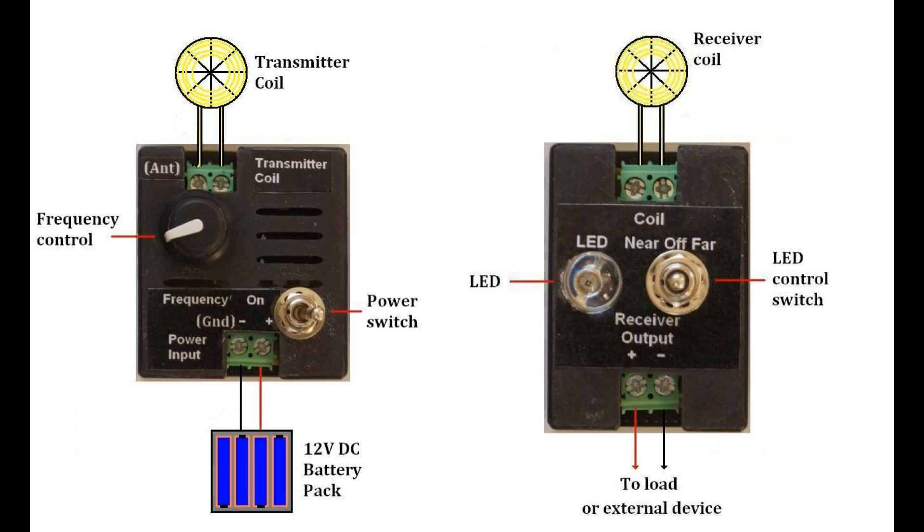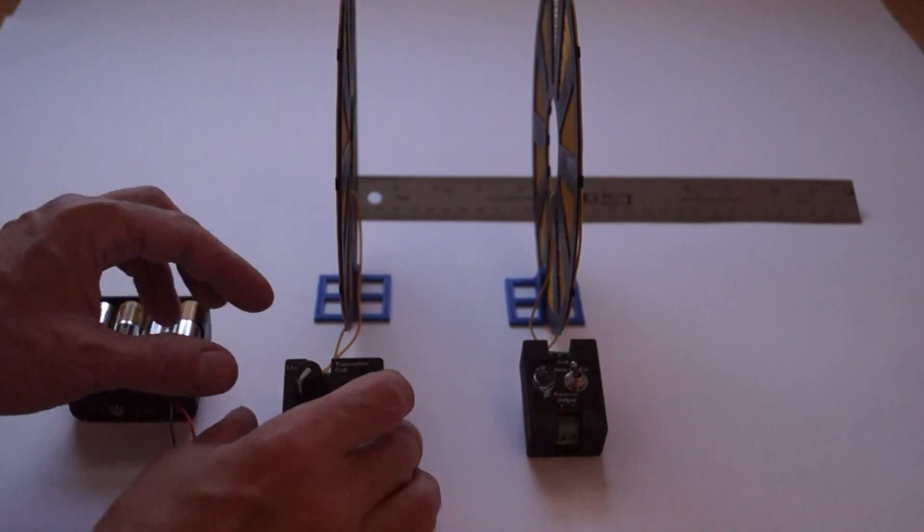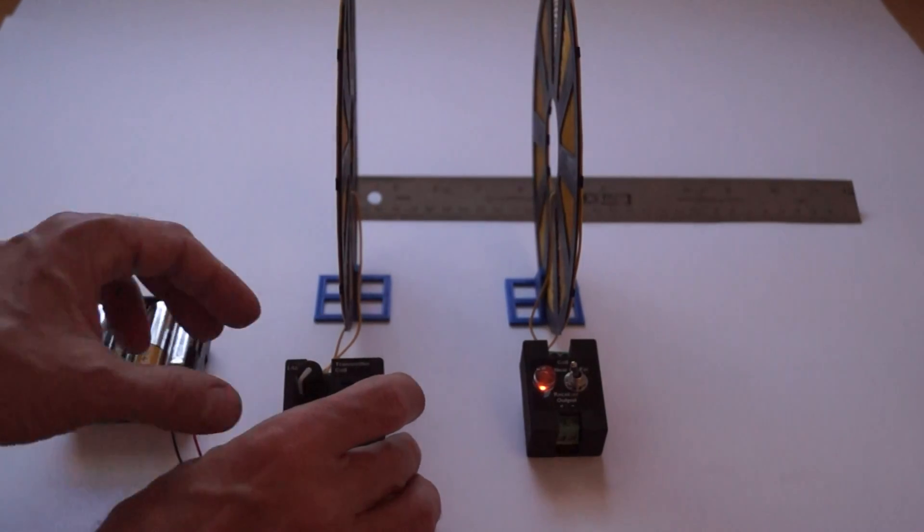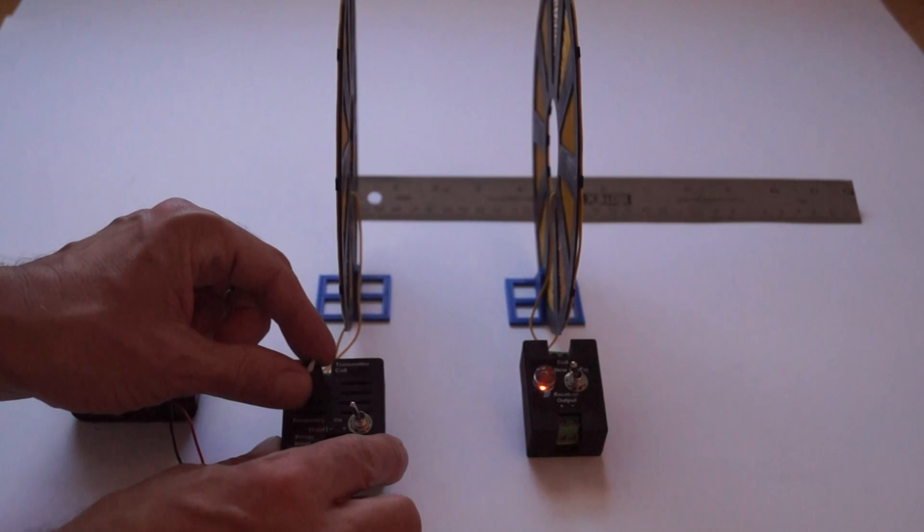Turn on the transmitter by flipping its toggle switch to the left. The LED on the receiver lights up indicating that power is received. Adjusting the frequency knob on the transmitter controls the power. Rotating clockwise increases the frequency but decreases the coil charging time per pulse. In the setup shown, maximum power will be when the knob is fully counter-clockwise.